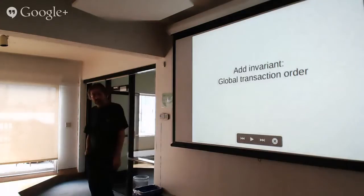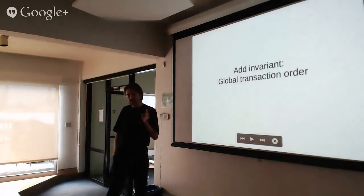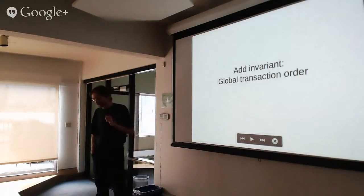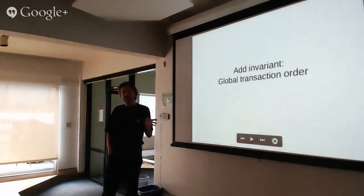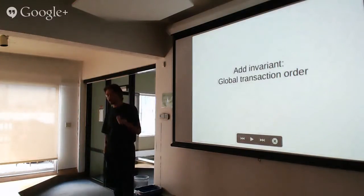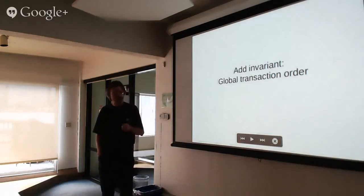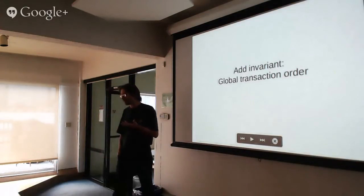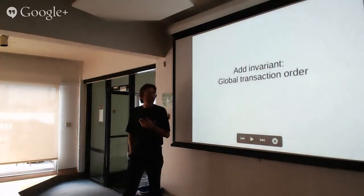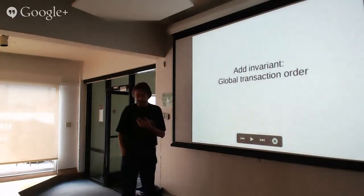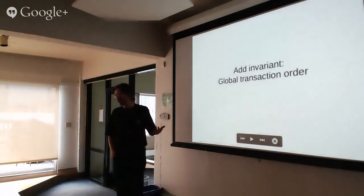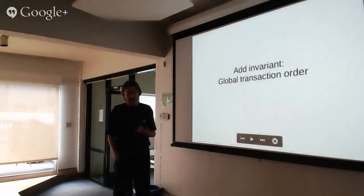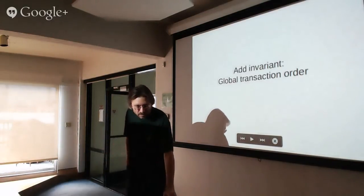Interestingly, the place they start from isn't just trading things away and making things worse — they don't just give up things, they actually add something. That's the first idea they come up with. If you add an additional invariant as well as a transactional invariant — if you require that there be a global transaction ordering that every system agrees on — that actually provides quite a lot of value.